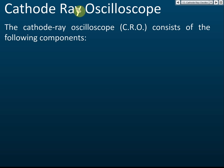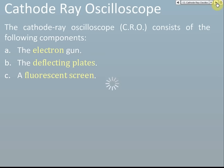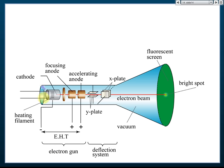The cathode ray oscilloscope consists of three main components: first, the electron gun; second, the deflecting plates; and third, the fluorescent screen. The electron gun spans from the heating filaments to the accelerating anodes. Its function is to produce a cathode ray — a beam of electrons shown in red — which is the cathode ray.